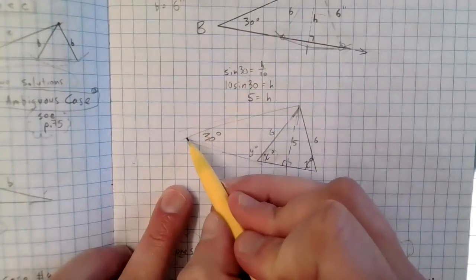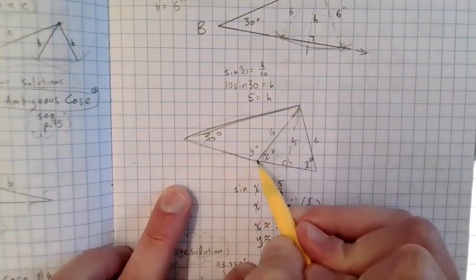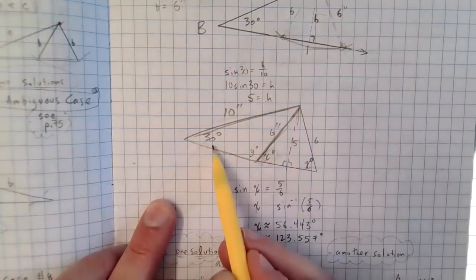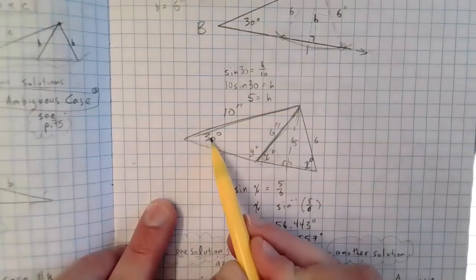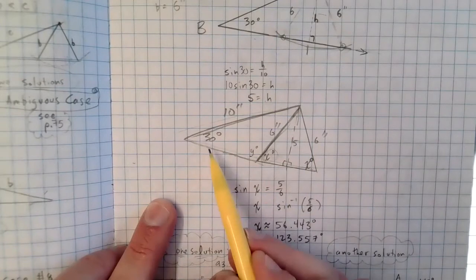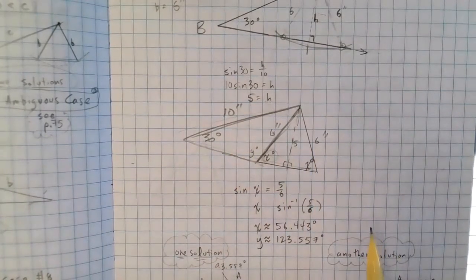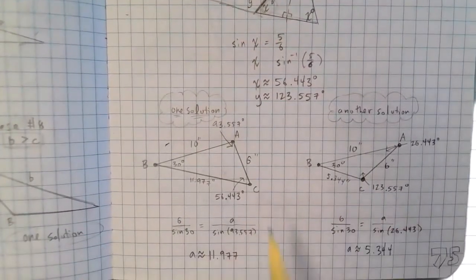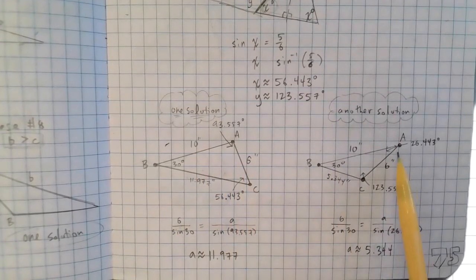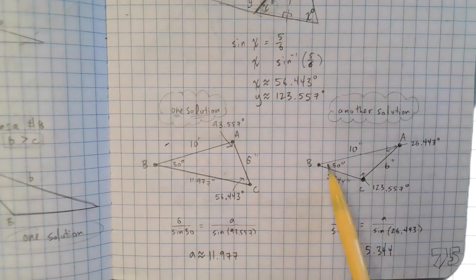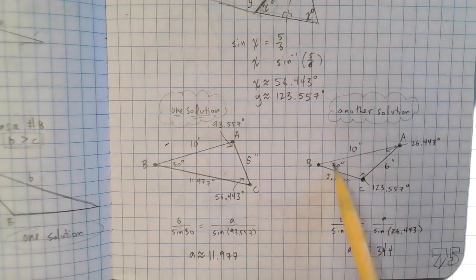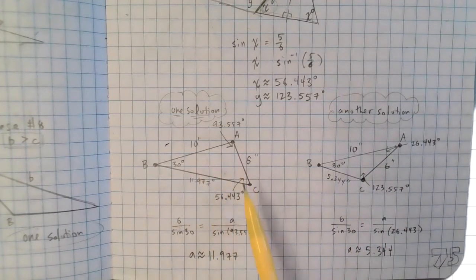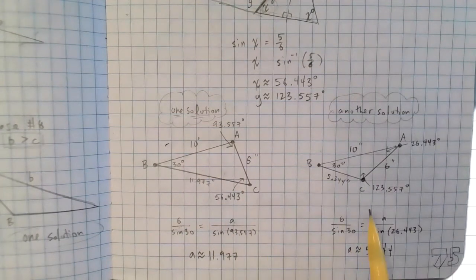But that doesn't quite get us to the only answer. Remember, this could be the triangle. Here, I'm going to sketch it out. Because this triangle has 10 inches and 6 inches and then 30 degrees. But this triangle also has 30 degrees, 10 inches, and 6 here. This also satisfies the given conditions here. So we can do this triangle here. And I think it is, oh yeah, this looks a little clearer. This is the obtuse triangle. Actually, I did this one first. This is the one I showed you. I guess they're both obtuse. So this has 30 degrees, 10 inches, and 6 inches. This one also has 30 degrees, 10 inches, and 6 inches.